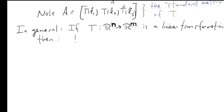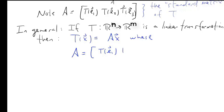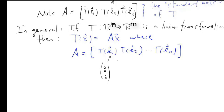This gives us our general template for finding the standard matrix. Matrix A is formed by columns T of E1, T of E2, and T of E3. We call this the standard matrix of T. To generalize, for any transformation from Rn into Rm, T of x equals A times x where A is the standard matrix with columns T of E1, T of E2, through T of En.